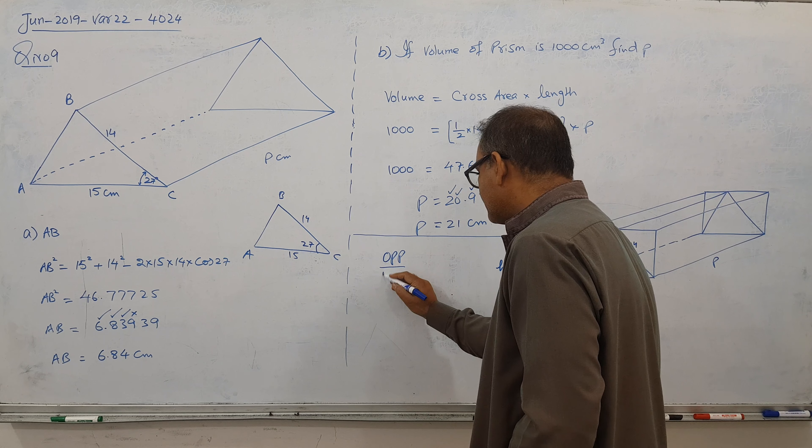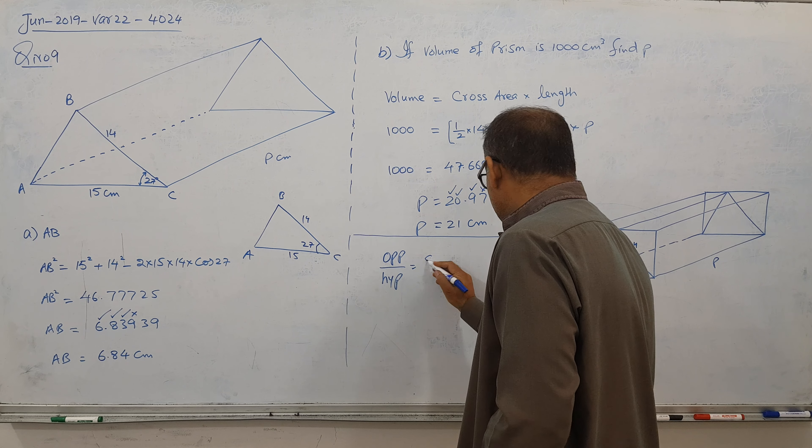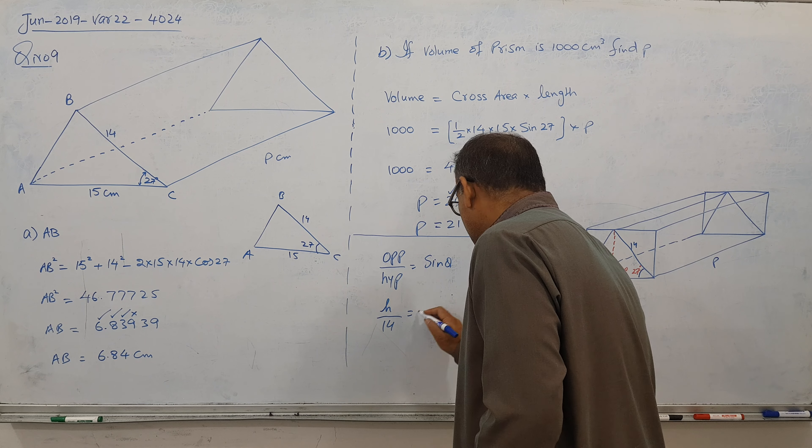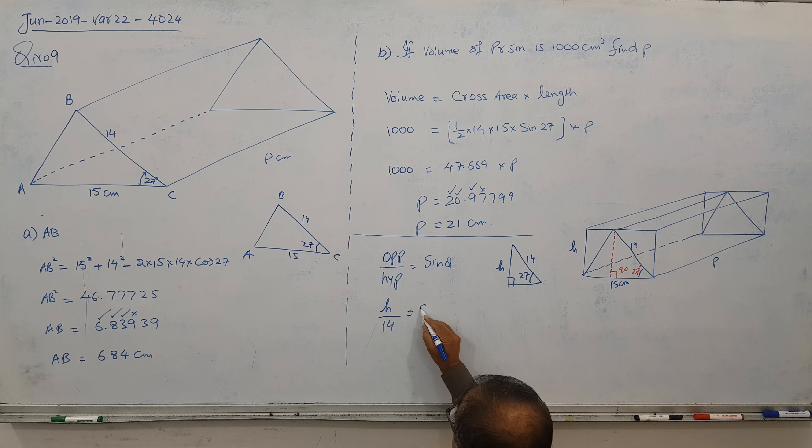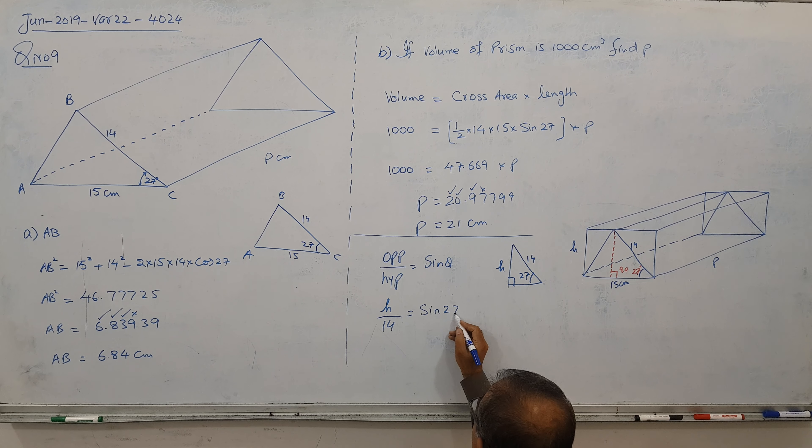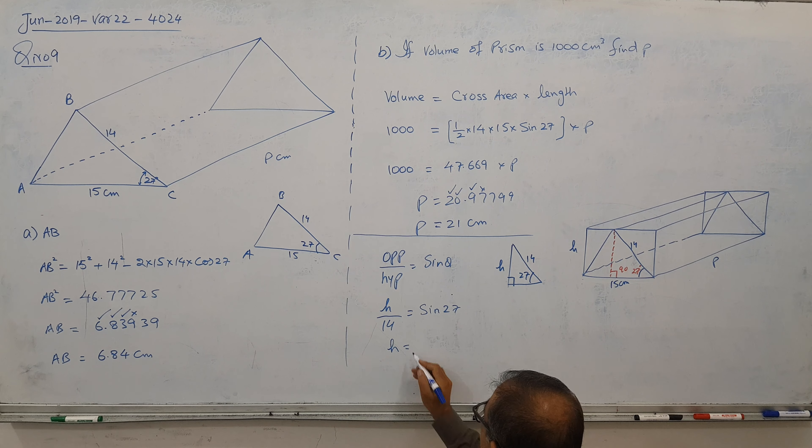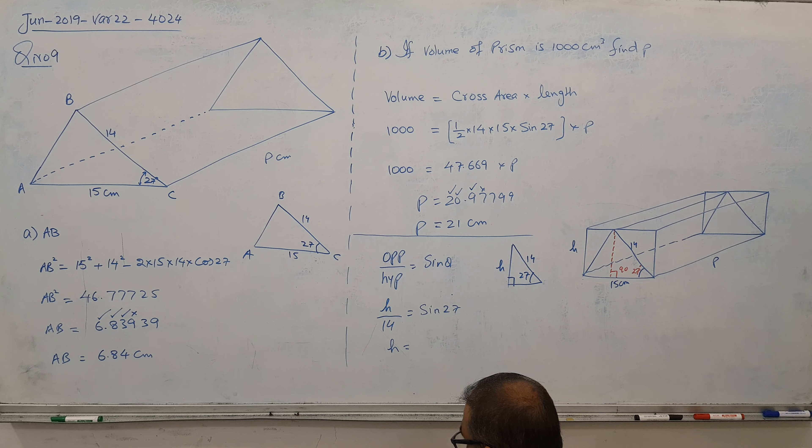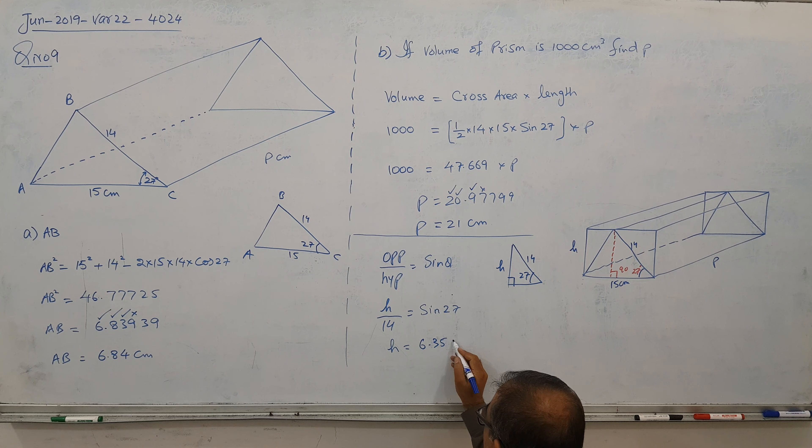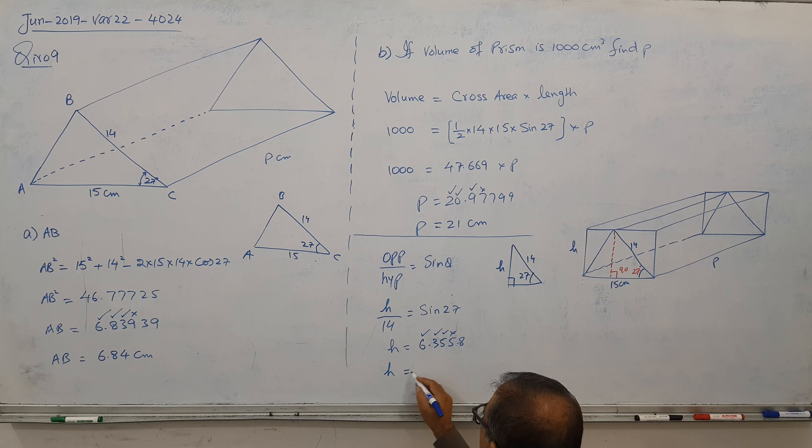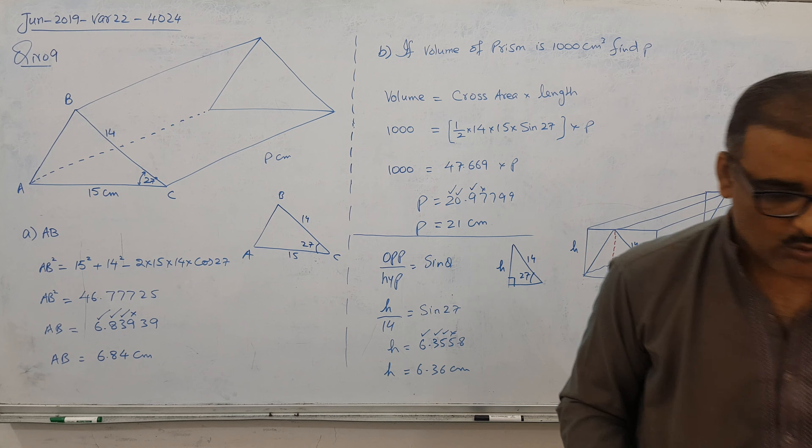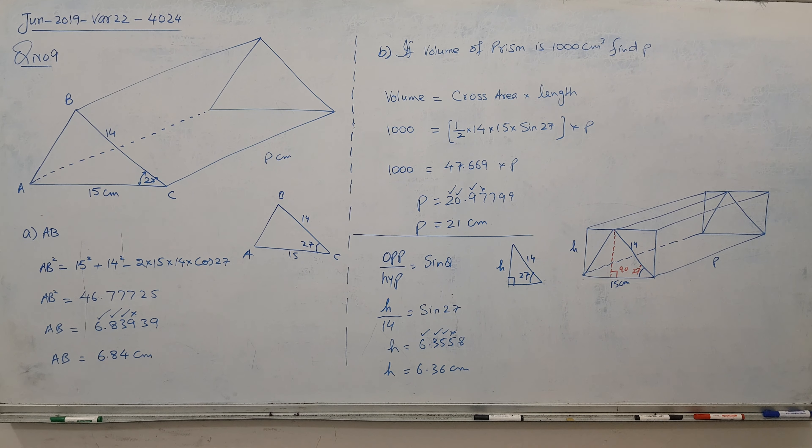All of you know it is sine theta. Opposite is the height, and hypotenuse is 14, and theta is 27. It multiplies there, 14 times sine 27. This gives us 6.3558. But as I said to you, we need 3 significant figures. So height becomes 6.36 cm. This height is required to fit in the box.